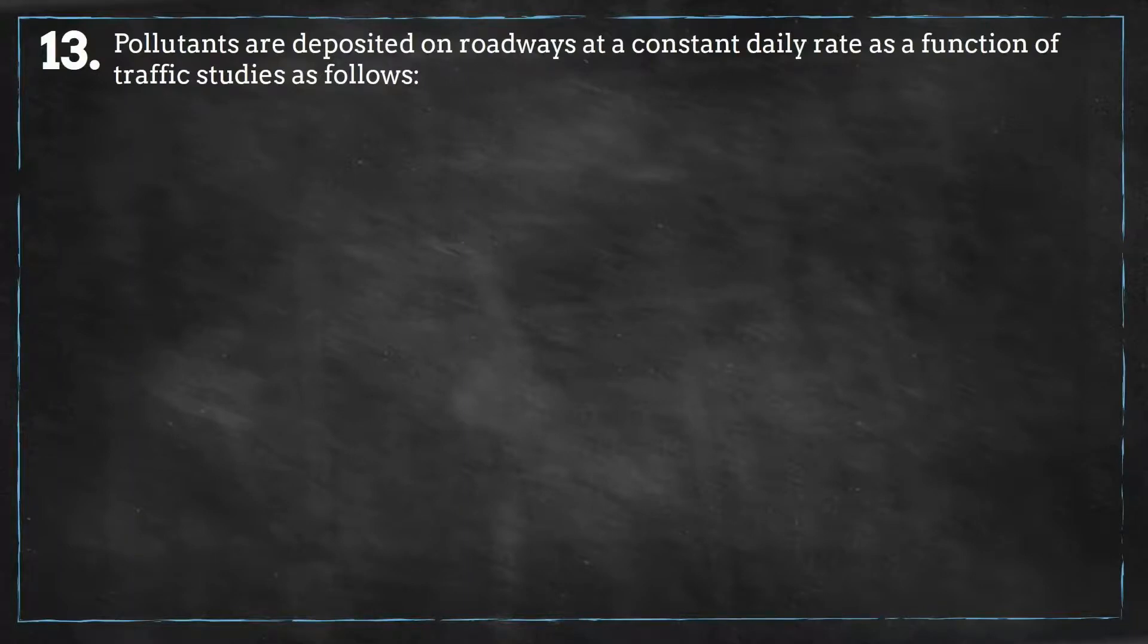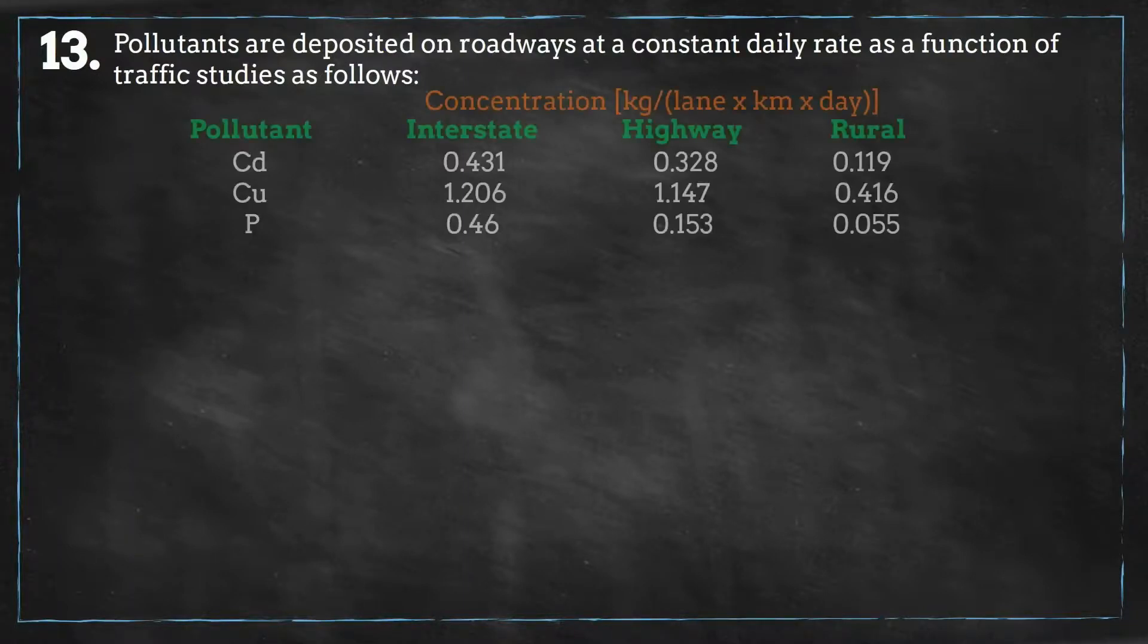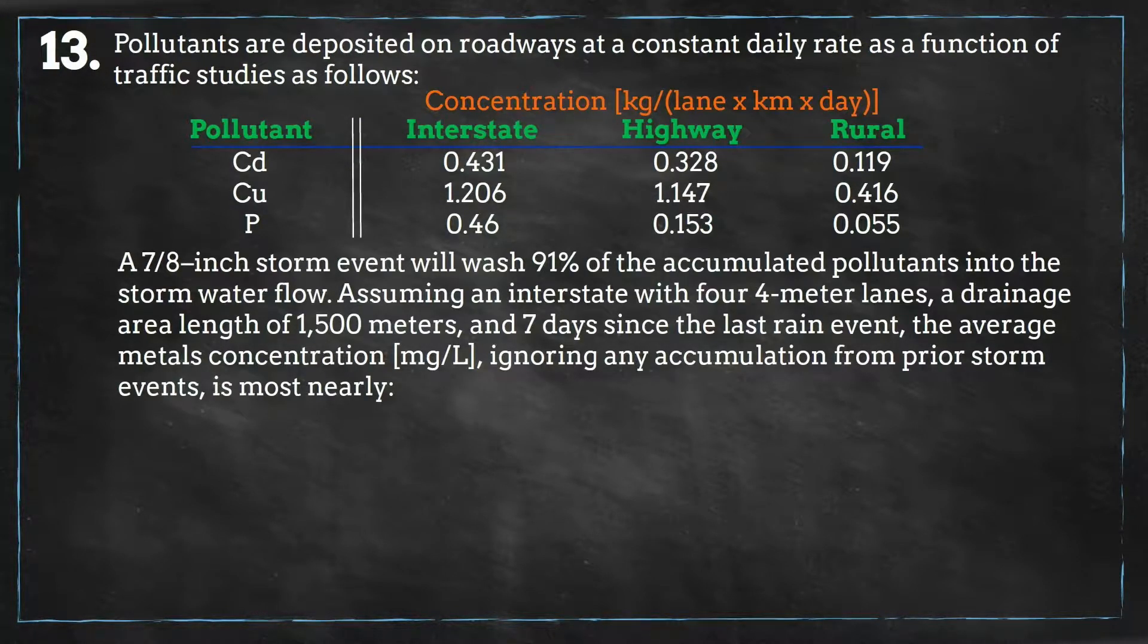Pollutants are deposited on roadways at a constant daily rate as a function of traffic studies as follows. A 7/8 inch storm event will wash 91% of the accumulated pollutants into the stormwater flow.